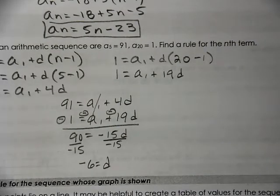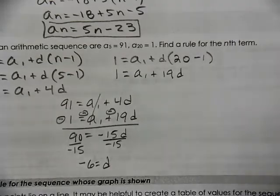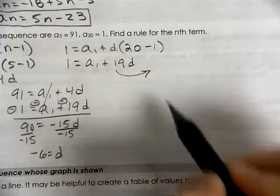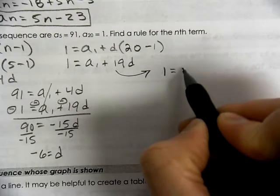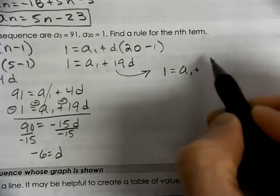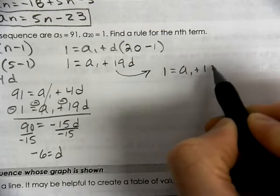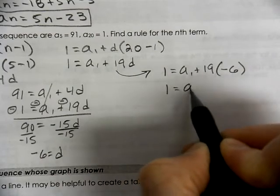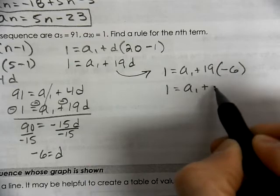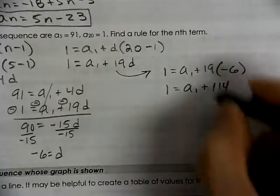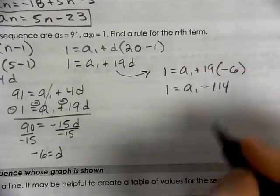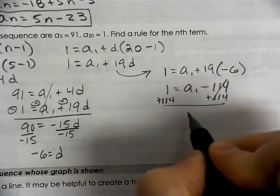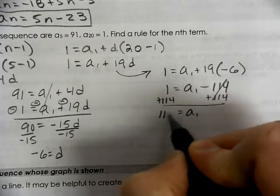Once I have the negative 6 for the d value, I now need to figure out what the a of 1 is. So I'm going to take either one of the equations. I can take this one. 1 equals a of 1 plus 19 times our d value, which is negative 6. 19 times 6 is 114, but that's a negative 114. So we're going to add it to the other side and find out that our first term would have had to have been 115.